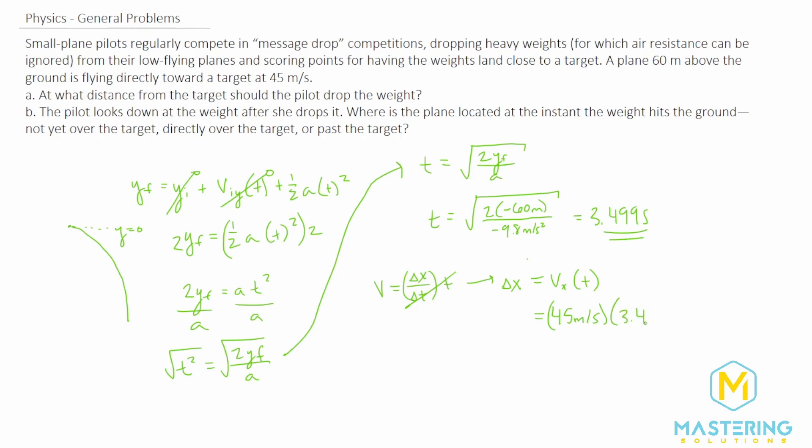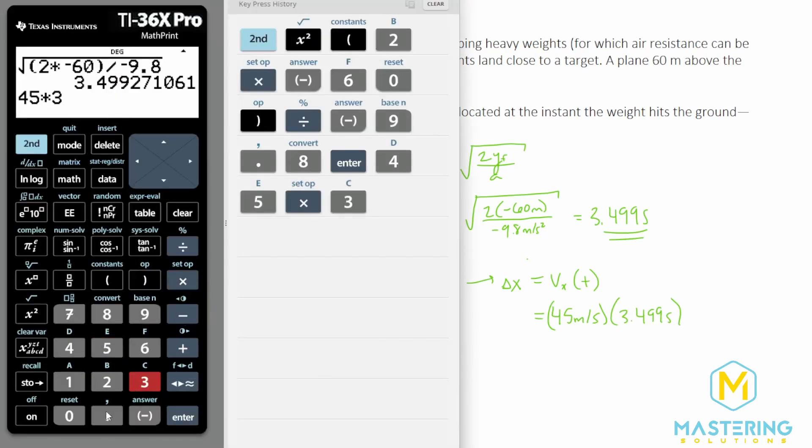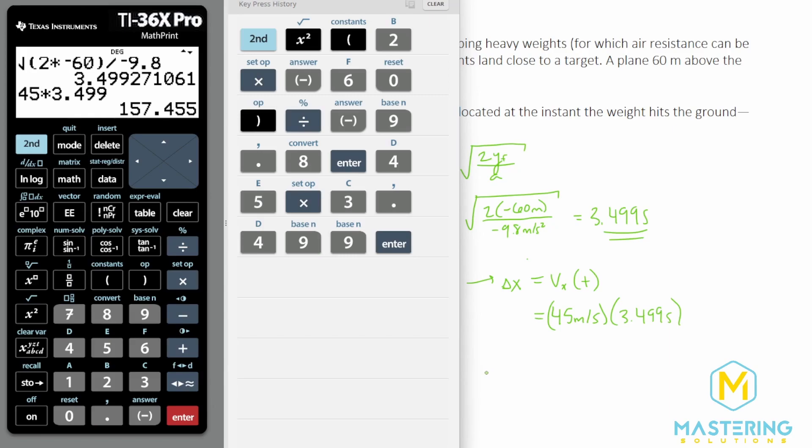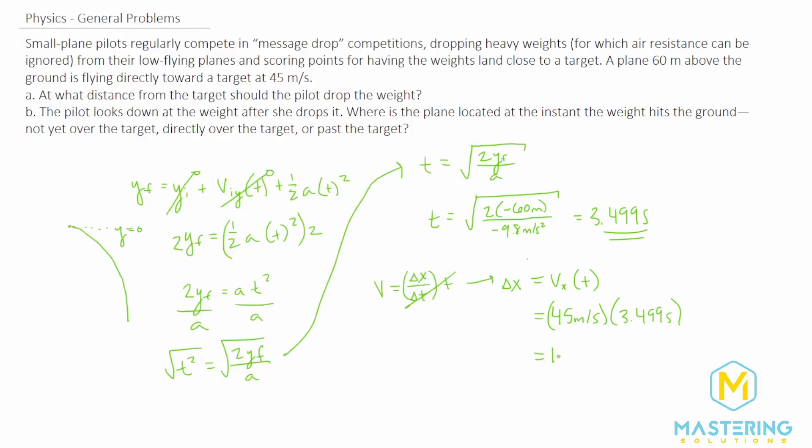We'll multiply that by 3.499 seconds. So 45 times 3.499 gives us a total distance of 157 meters so we'll round that to 160 for two significant figures. So this is how far away from the target she needs to drop the weight to hit the bullseye.